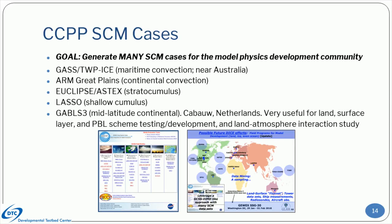There are a number of CCPP-SCM cases — many historical and available — that have been studied by the research community. Currently, our cases include maritime convection, continental convection, stratocumulus, shallow cumulus, and mid-latitude continental environments. Our goal is to have many additional cases included, such as a variety of different meteorological regimes for different regions, community-contributed cases, and cases made available through international collaborations, where the CCPP-SCM is adopting an internationally agreed-upon format for input datasets, the DEPHY format.